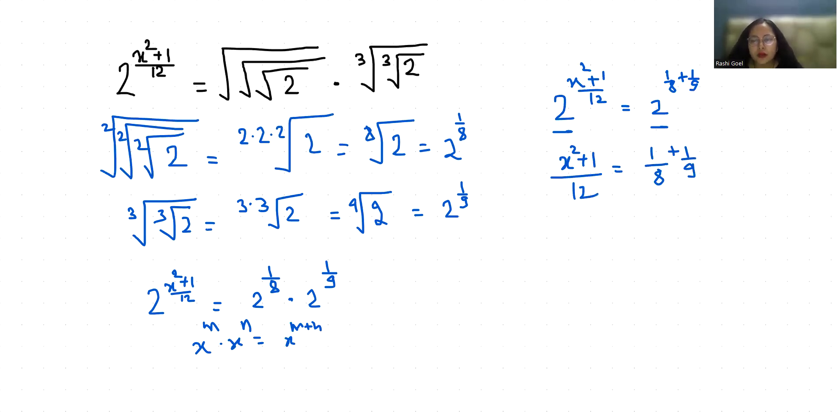So x square plus 1 by 12 equals, 8 times 9 is 72, and this becomes 9 plus 8. So x square plus 1 by 12 equals 17 by 72.